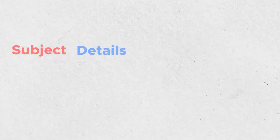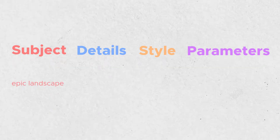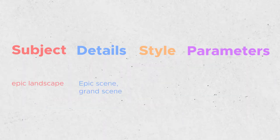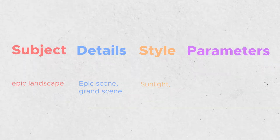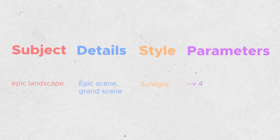To generate an image with Midjourney, there is a structure we need to follow. Each text prompt has a structure of subject, details, style, and parameters. You choose a subject you want to see, add the details to it, and pick the style you want. We won't focus on parameters too much, as we will only use one: V4.